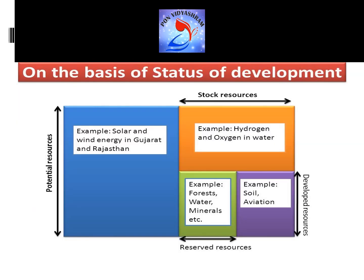The next classification is on the basis of status of development. Potential resources are found in abundance but have not been developed properly — for example, solar and wind energy in Gujarat and Rajasthan, where availability is huge but consumption is very less relative to the potential. Developed resources are those whose exact quantity and quality is known and planned with appropriate technology. Stock refers to resources that have potential to satisfy our needs but the technology to use them has not yet been developed. Reserve refers to resources where technology is available but exploration has not yet started — these are kept for future use.